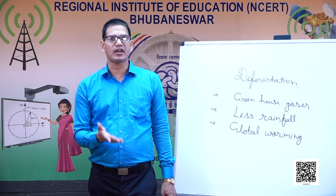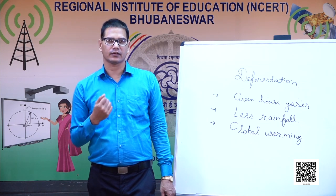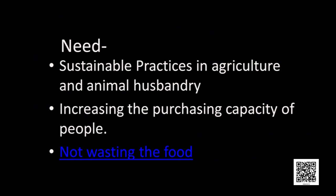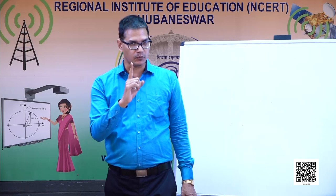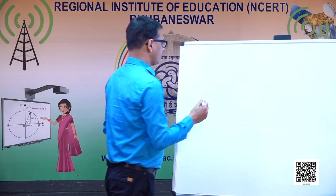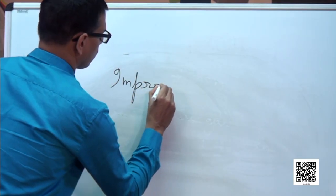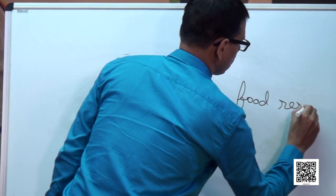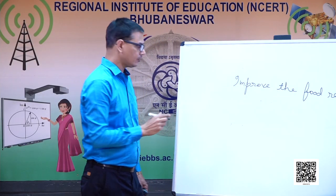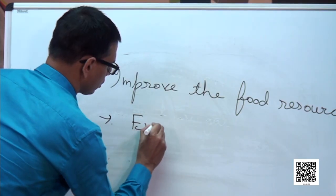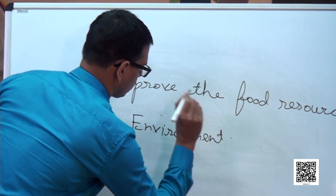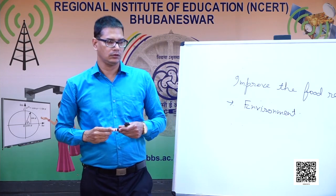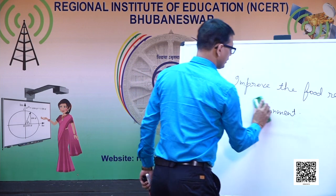The solution is sustainable practices in agriculture and animal husbandry. Sustainable means we have to improve, but not at the cost of the environment. We have to improve production and improve food resources by keeping the environment in mind. We cannot ignore it — as we know, if we ignore it, we suffer a lot.